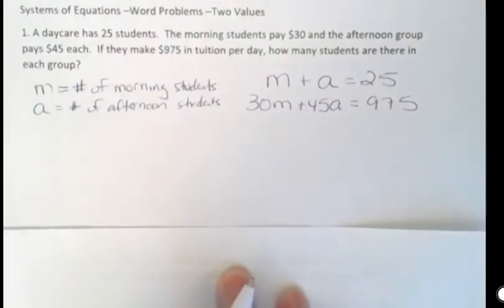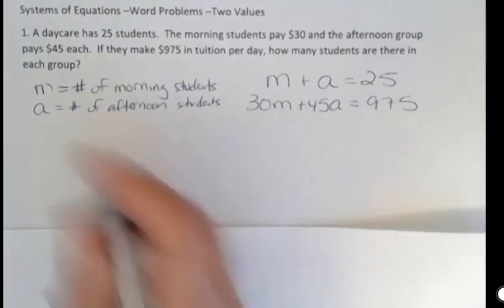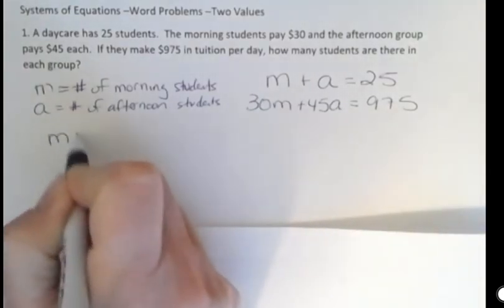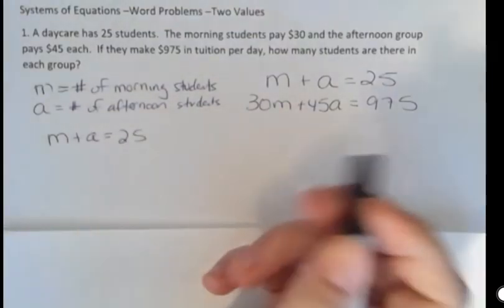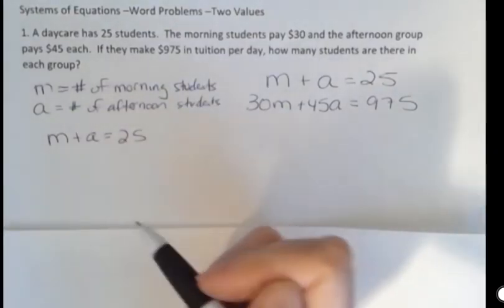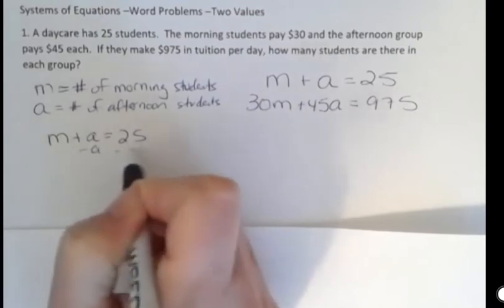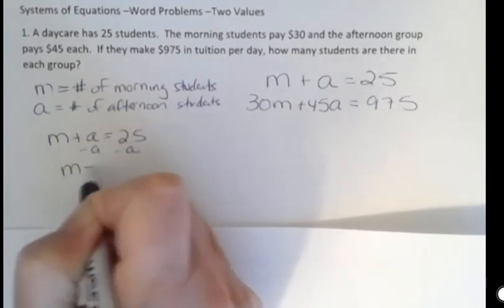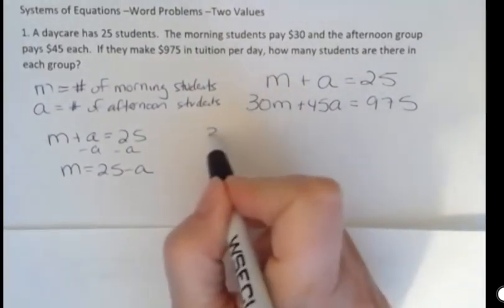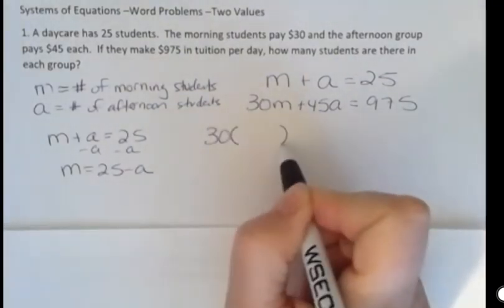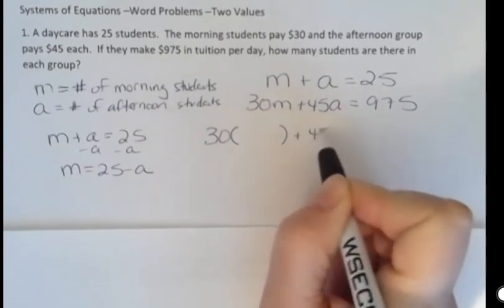And so this time I'm going to use the substitution method. I'm going to take one of my equations and I'm going to rearrange it. Let's say I rearrange it for M by subtracting A from both sides. So M equals 25 minus A. Now I'm going to take this equation and where I used to have M, I'm going to replace it with what M is equal to.